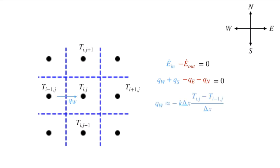q west over here, using Fourier's law, where we approximate the temperature gradient as the first order difference, Tij minus Ti minus 1 comma j divided by the spacing between them delta x.